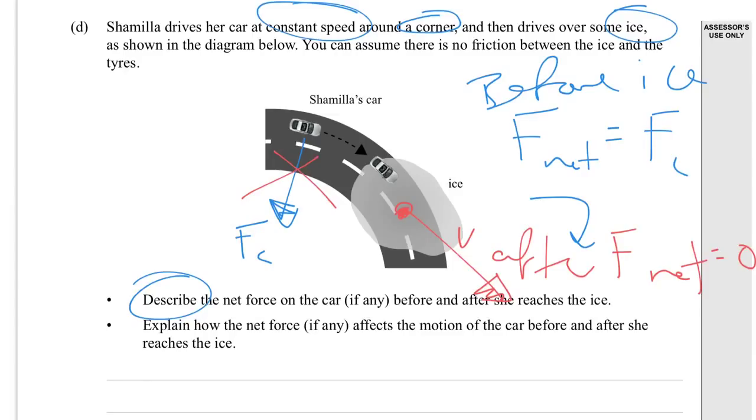Okay. Next part. Explain how the net force, if any, affects the motion of the car before and after she reaches the ice. So we've sort of talked about that. Initially, you've got the net force causing it to turn in a circle. And then afterwards, you've got no net force. So it's constant motion with no changes in anything.